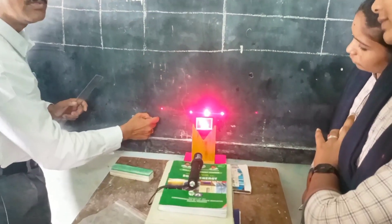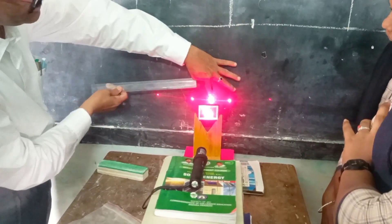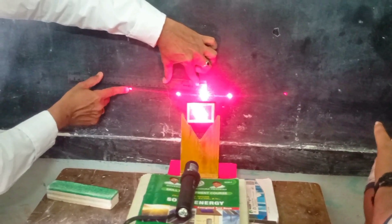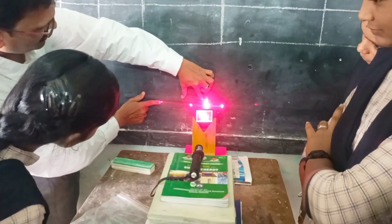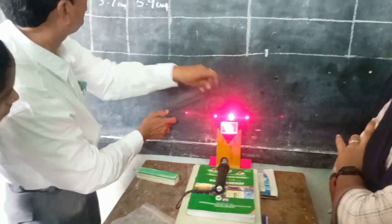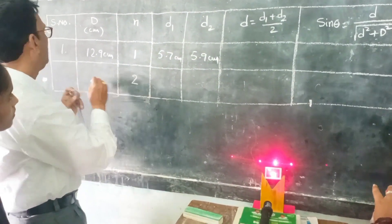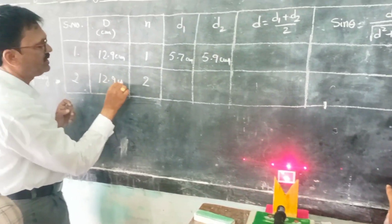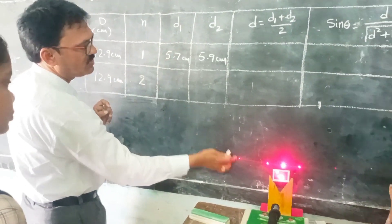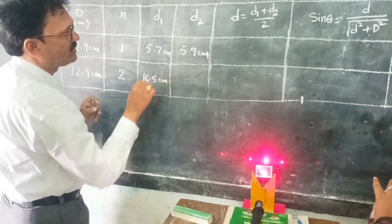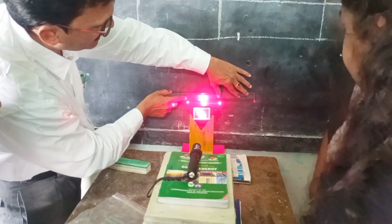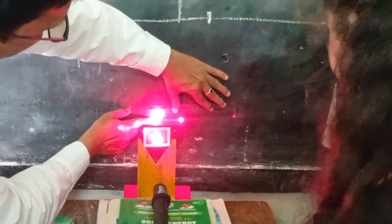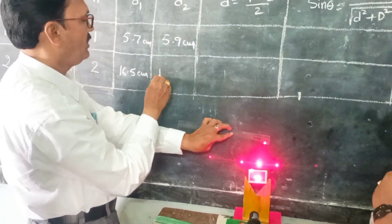Coming to measure the second order — from the central bright fringe to the second order on the left side, the distance is 16.5 cm. The screen-to-grating distance remains constant at 12.9 cm. On the right side, the distance from central bright fringe to second order is 17.5 cm.